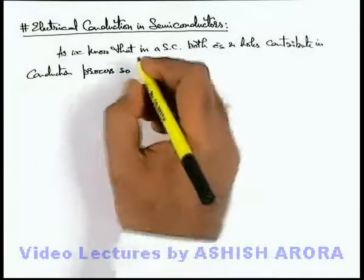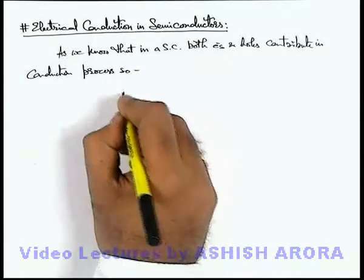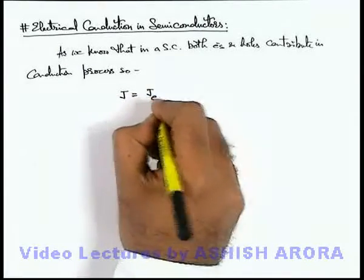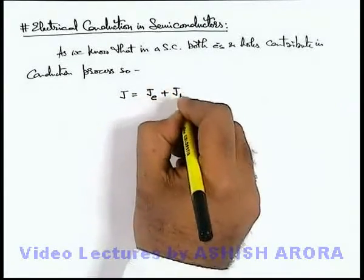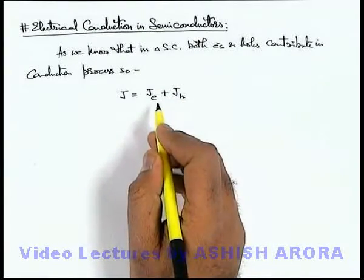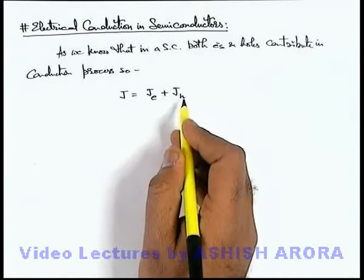So we can directly state that current density in a semiconductor can be written as current density due to electrons plus current density due to holes. Because we already studied that due to transportation of electrons and holes, current exists in same direction.